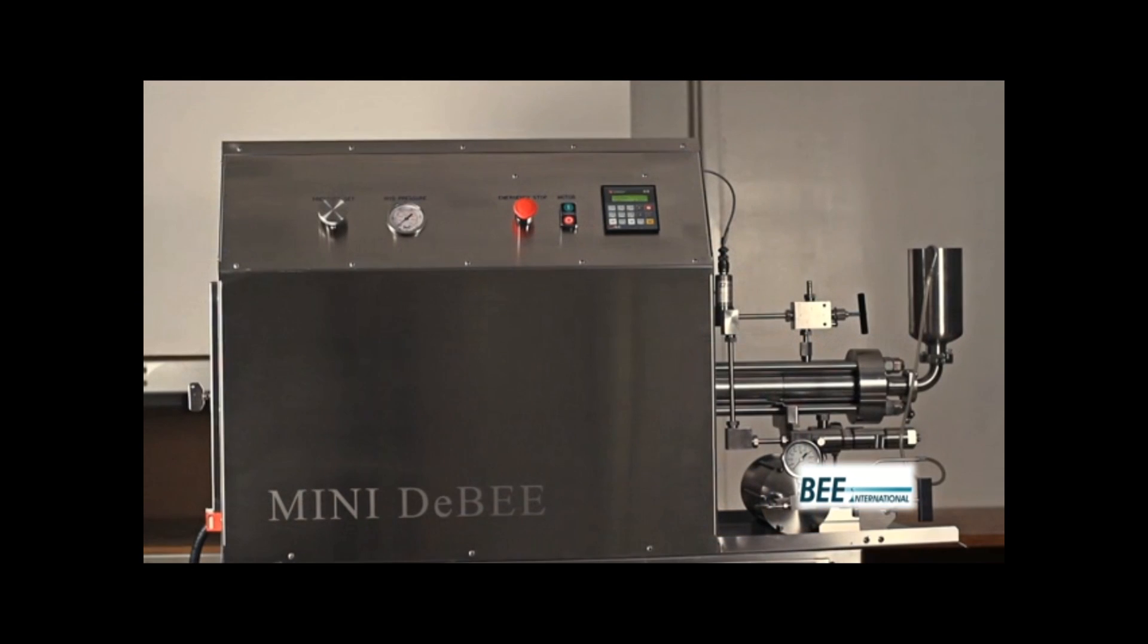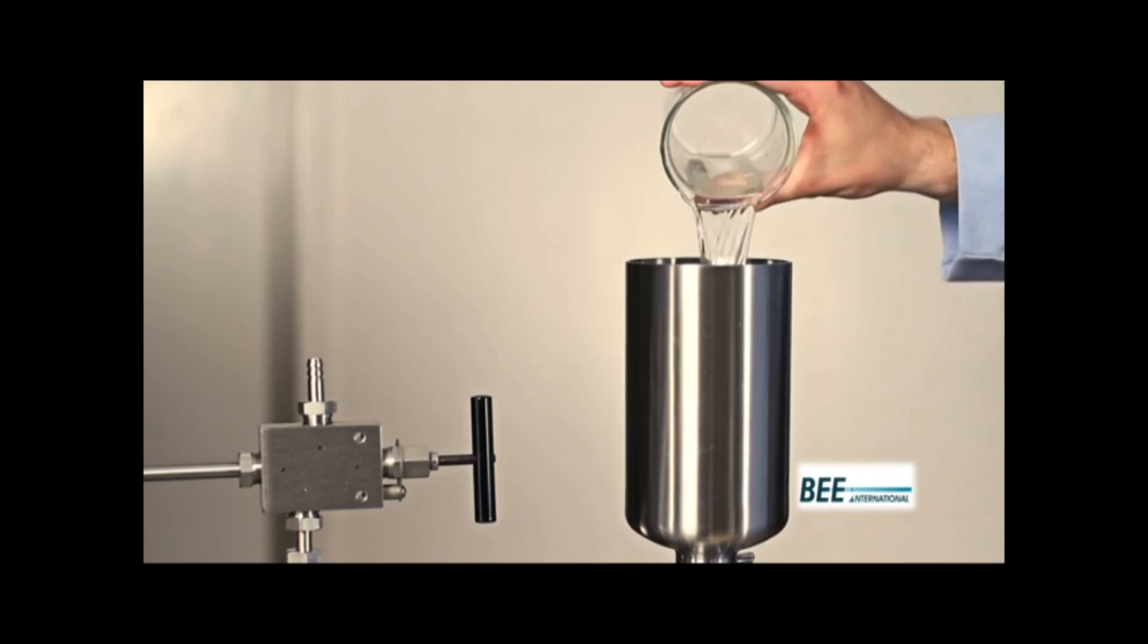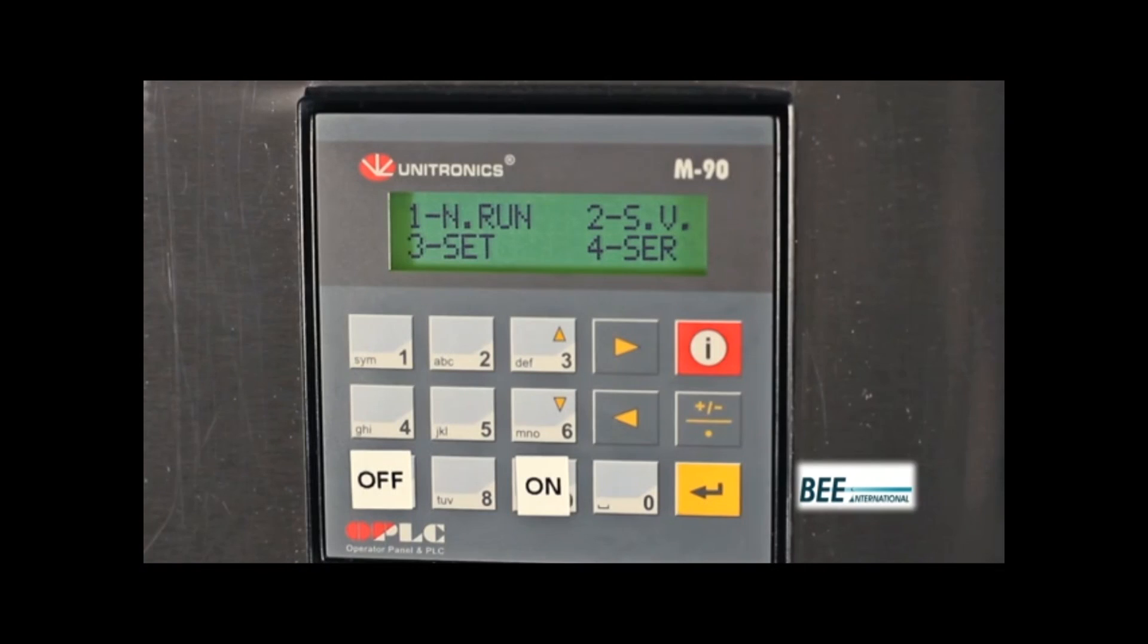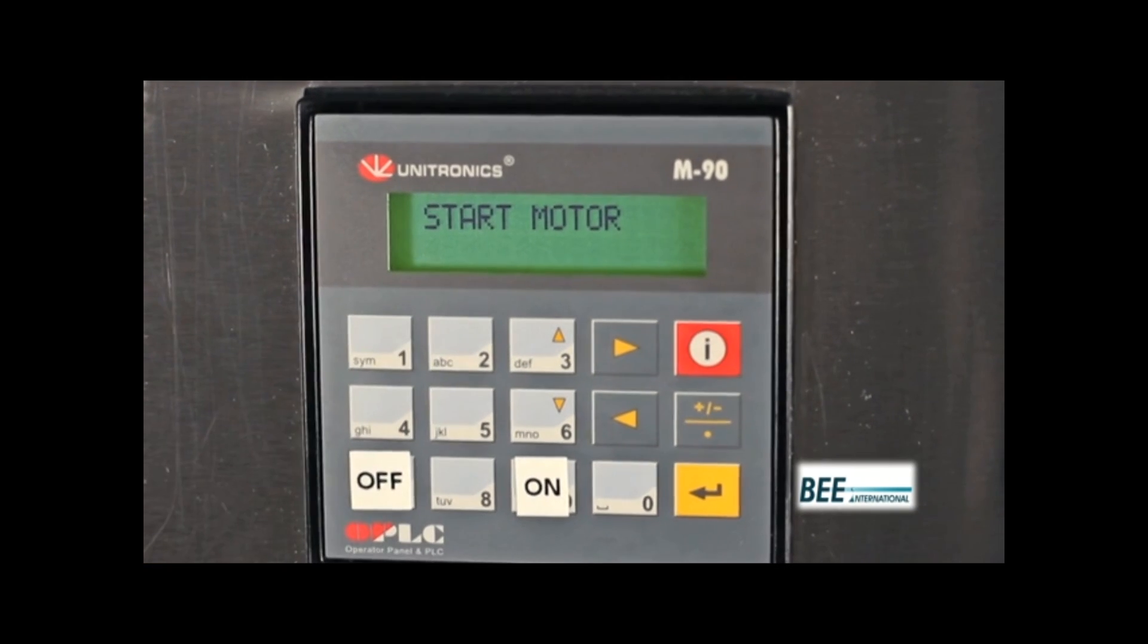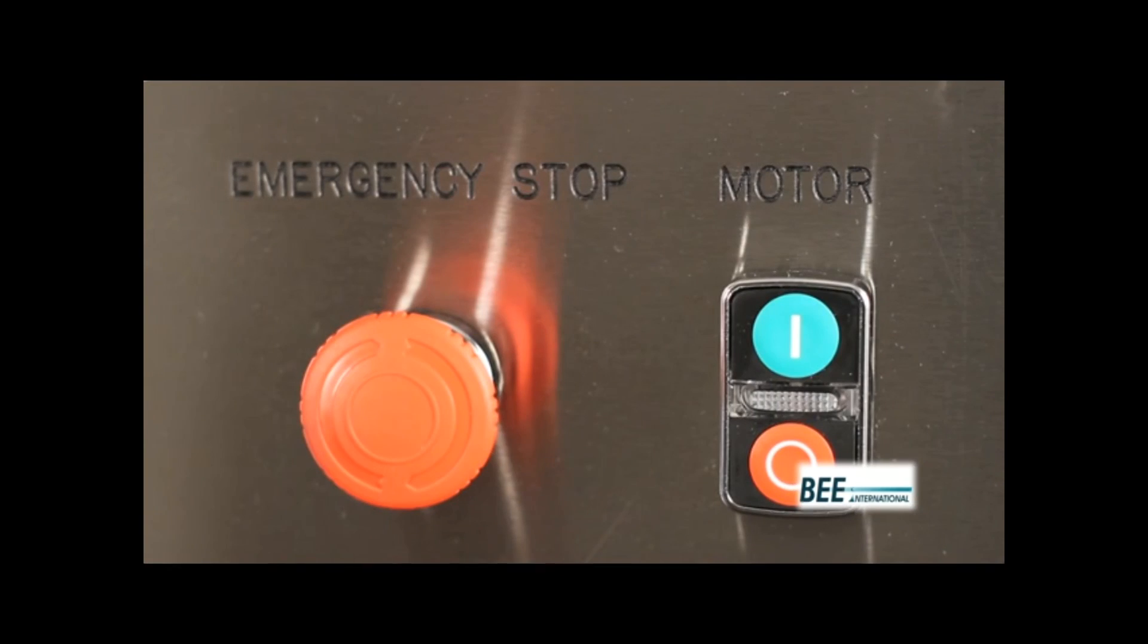To operate the MiniDB, first ensure the inlet reservoir is filled with product and the system is primed. Press 1 on the PLC to enable normal run mode. Turn the pressure set dial counter-clockwise for the lowest pressure setting. Then turn the motor button on.